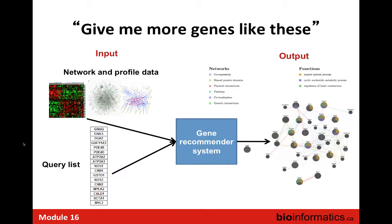So you have network and profile data, you have a query list, and you plug it into your gene recommender system. The genes in the query list appear in the network, the black ones are the guilty associates — genes not in the query list — and the functions are annotated to help navigate. Individual networks are indicated by colored links. All the other genes that came along with this query list are probably more genes like the ones you're interested in, and you can use enrichment to say something about shared function in the list.